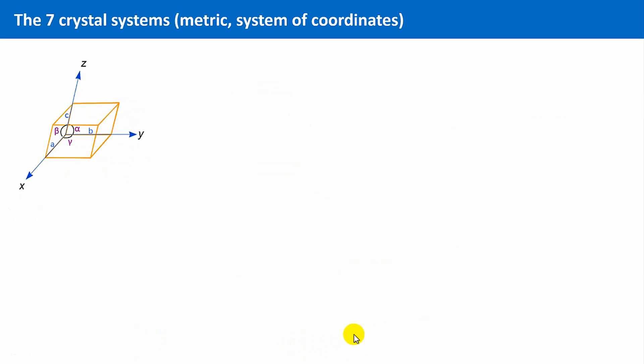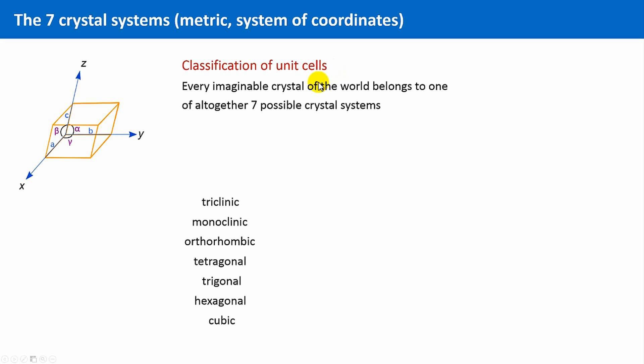And now we are going to classify unit cells. We already saw several possible unit cells with different shapes. Interestingly, the number of different unit cell shapes expressed by the metric is very limited. All the crystals of the world can be classified into not more than 7 crystal systems.